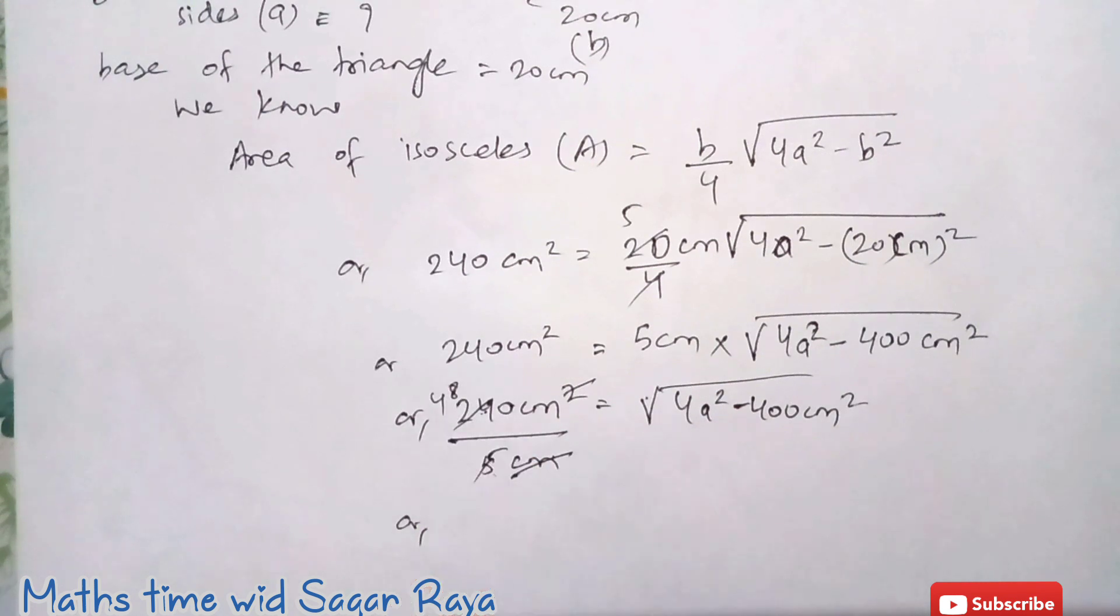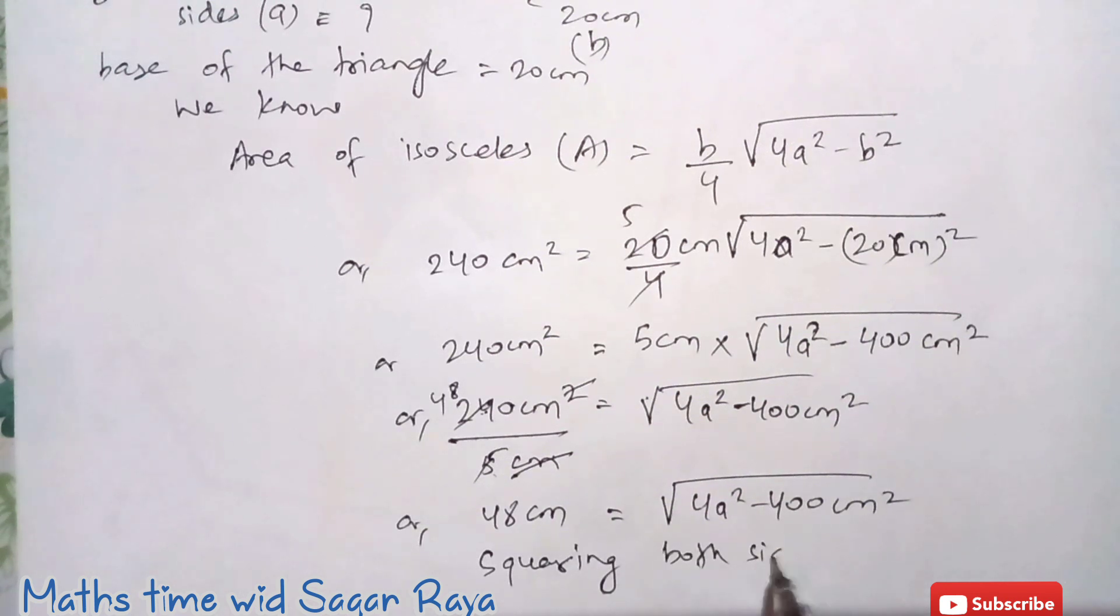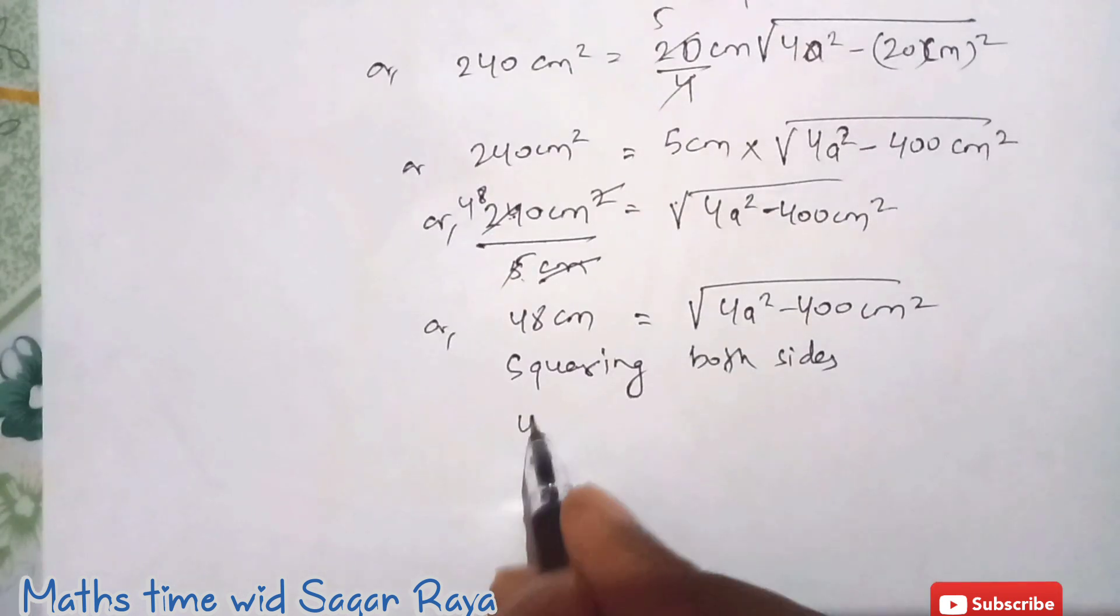So here 48 cm equals to root under 4a square minus 400 cm square. Now what you can do is to remove this root, you'll just square both sides.